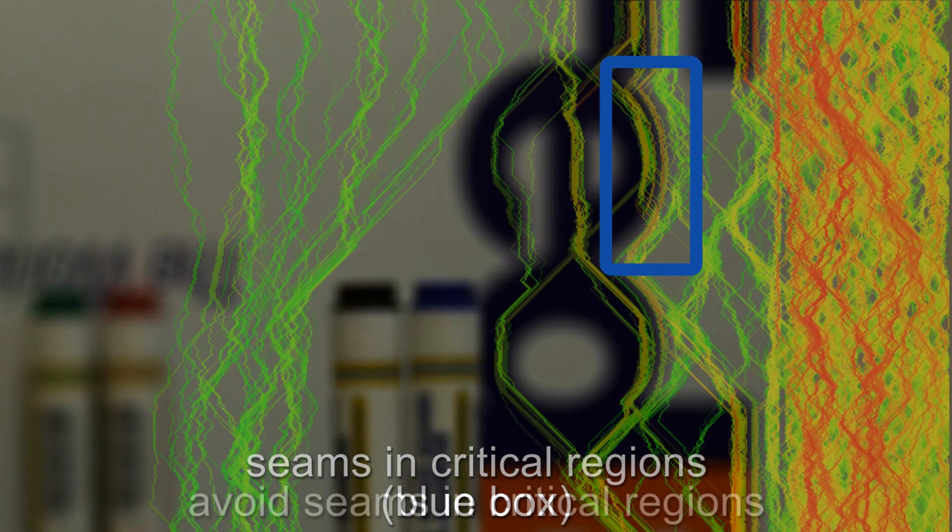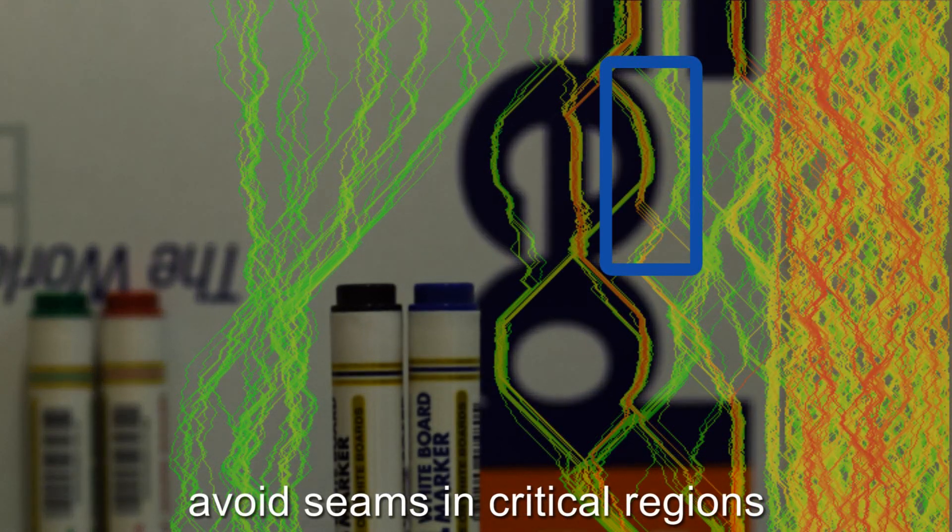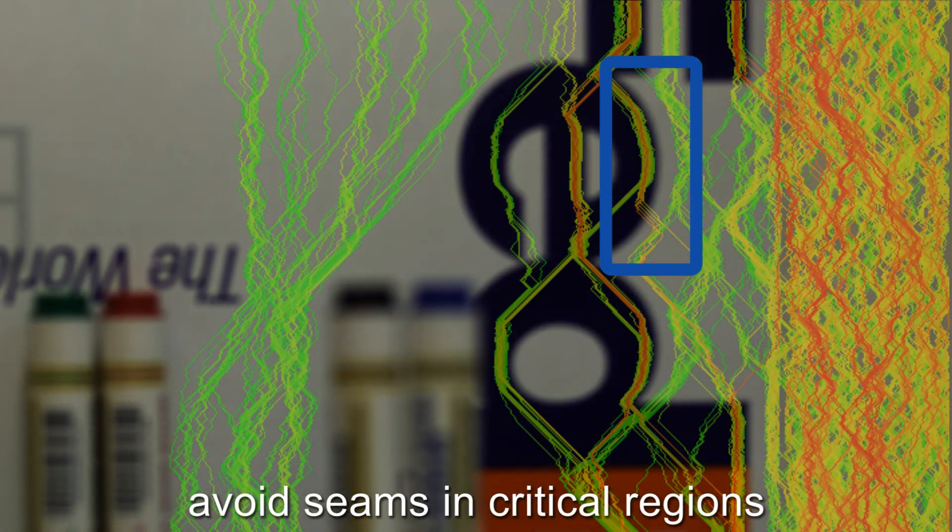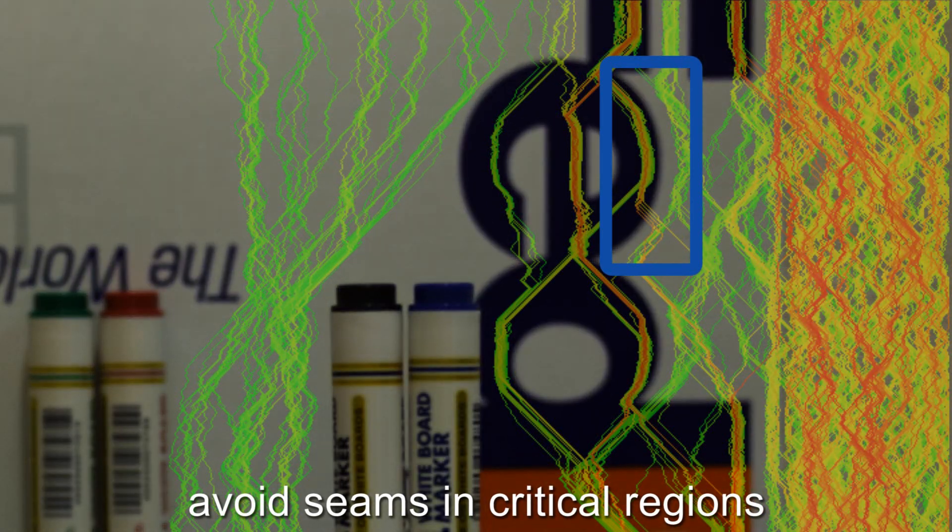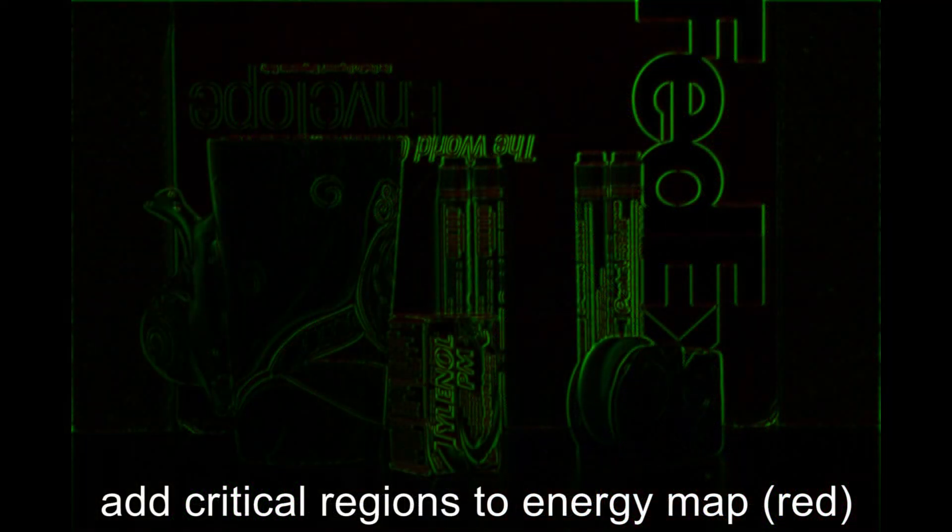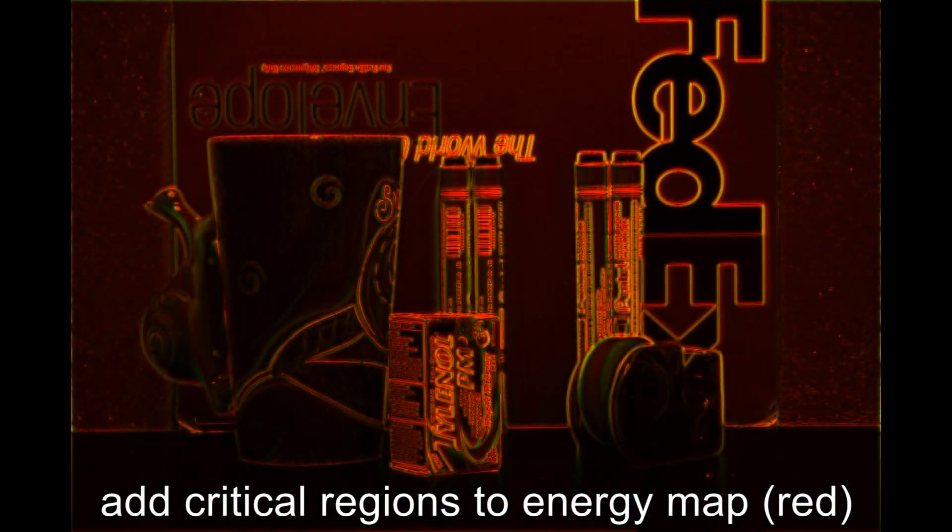Therefore, we avoid cutting seams through these critical regions. They are determined by integrating the RGB differences between all focal stack slices and the deconvolved central perspective. This integral is used as an additional energy term for seam carving.